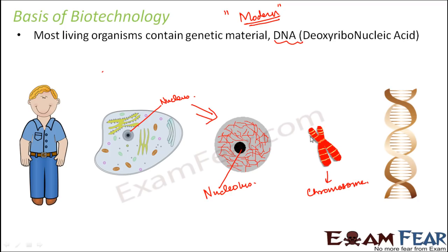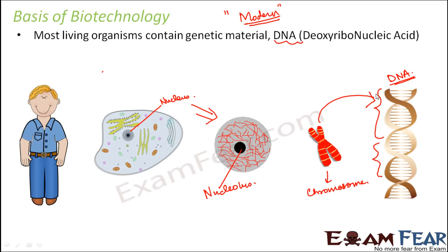Inside the chromosome you have the genetic material, and the genetic material is DNA — deoxyribonucleic acid — which has a double-stranded structure. On this DNA you have the genes. For example, let us say this much portion of the DNA represents the gene for hair color, and this portion represents the gene for eye color. The gene for hair color will help in the synthesis of proteins that give that specific color to your hair. Similarly, the other portion of the DNA helps in synthesizing proteins that give color to your eye.